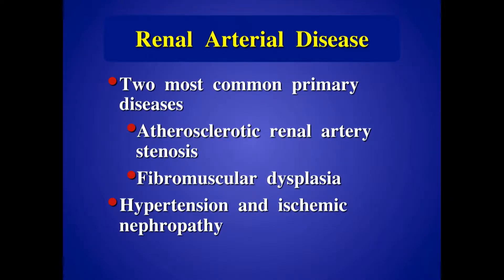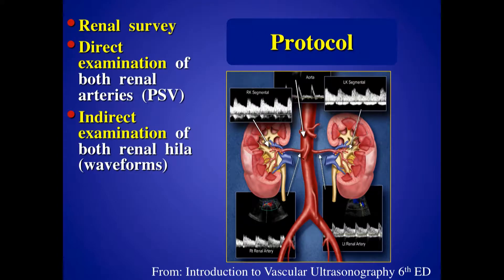In my last few minutes, I'll talk about renal arterial disease. Most commonly these patients are atherosclerotic; every once in a while you get a patient with another etiology such as FMD. Both can produce hypertension and ischemic nephropathy. Our protocol: we look at the kidneys first, then the aorta. We get peak systolic velocity measurements from the renal arteries, then take waveforms from inside each kidney at the level of the segmental arteries to look at the waveforms.